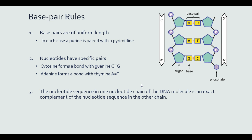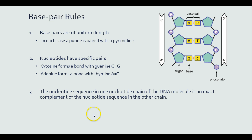The last of the base pair rules is that the nucleotide sequence in one nucleotide chain is an exact complement of the nucleotide sequence in the other chain, which goes along with base pair rule 2. So G complements C, C complements G, A complements T, T complements A, and so on.